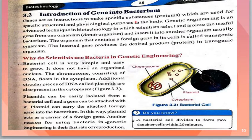Introduction of gene into bacterium: a gene acts as an instruction to make a specific substance — protein. Genes are tiny physical units which transfer hereditary characters. They are made of DNA. The basic work of a gene is to provide the instruction to make specific substances called proteins, which are used for specific structural and physiological purposes in the body.